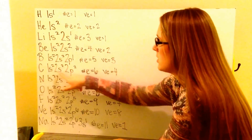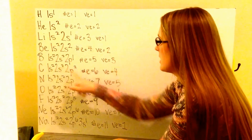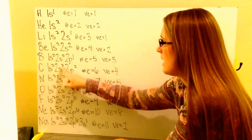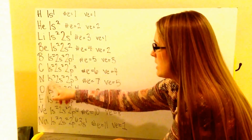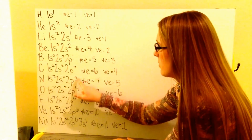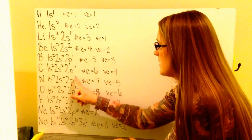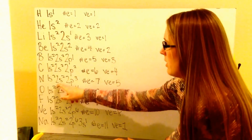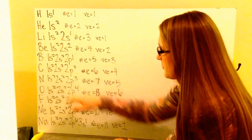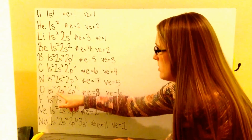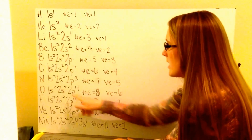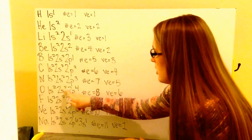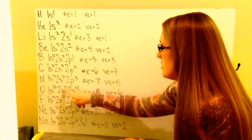Carbon is 1s2, 2s2, 2p2 — six total electrons, four valence electrons with the two in the 2s plus the two in the 2p. Nitrogen is 1s2, 2s2, 2p3 — seven total electrons, five valence electrons: 2 plus 3 in the highest energy level. Oxygen is 1s2, 2s2, 2p4 — eight total electrons, six valence electrons: 2 in the S and 4 in the P. These are the number of electrons in the highest energy level.